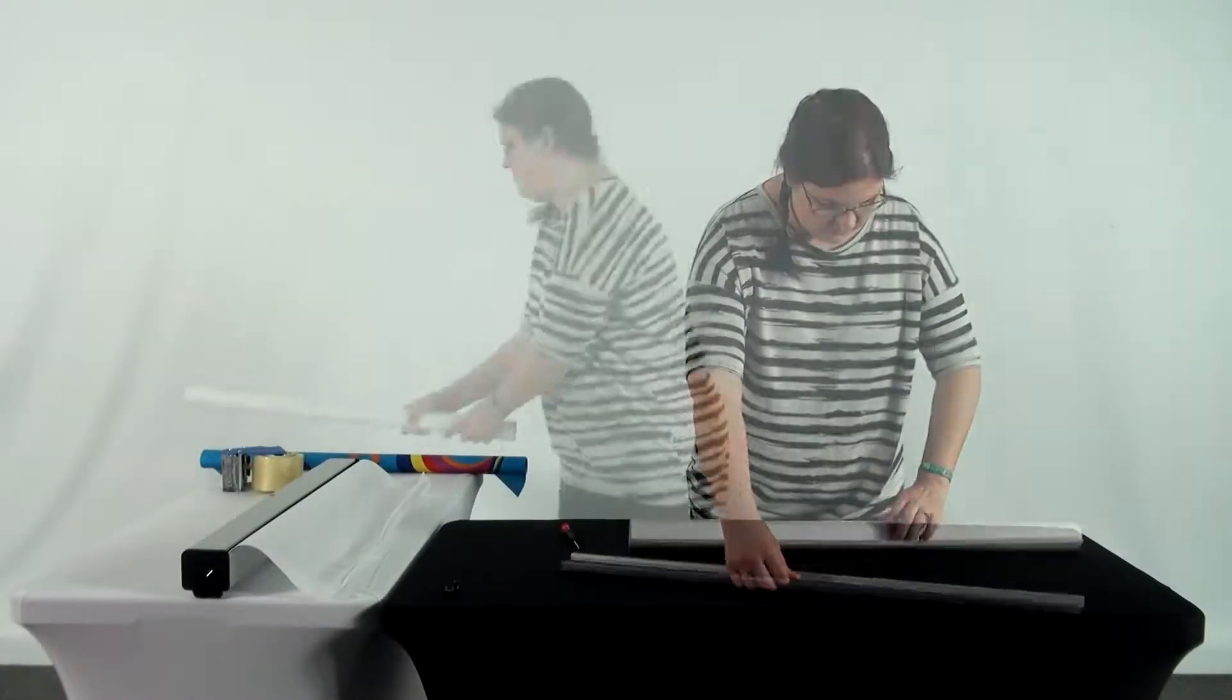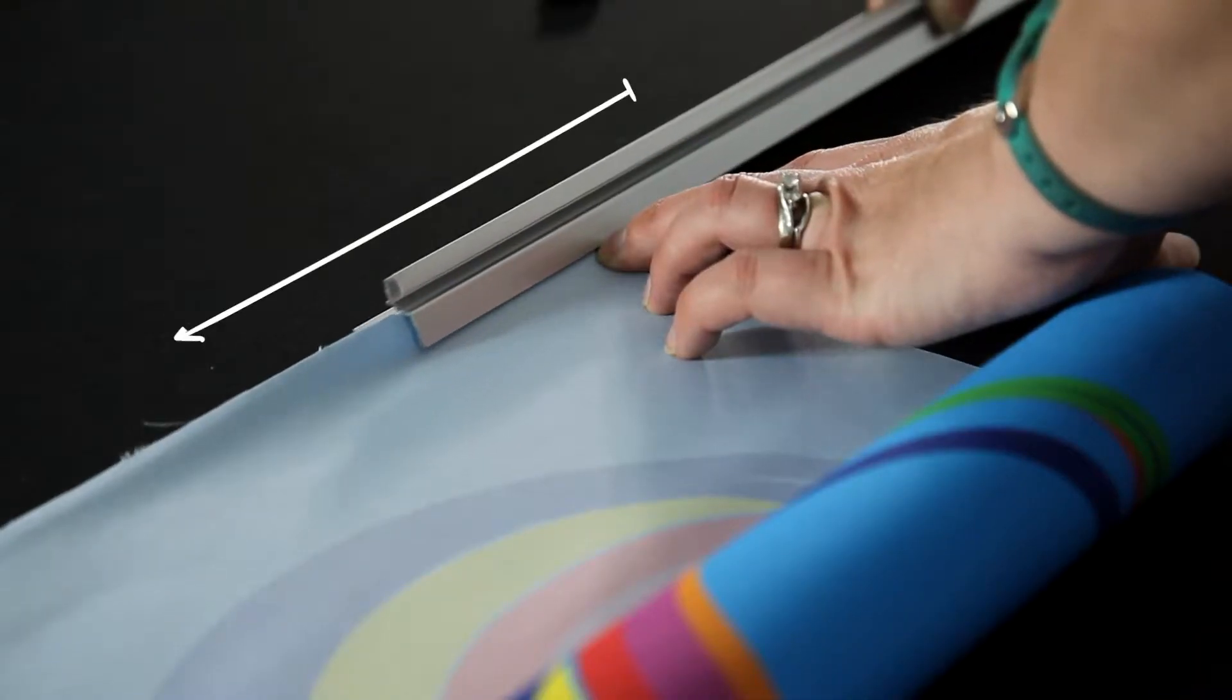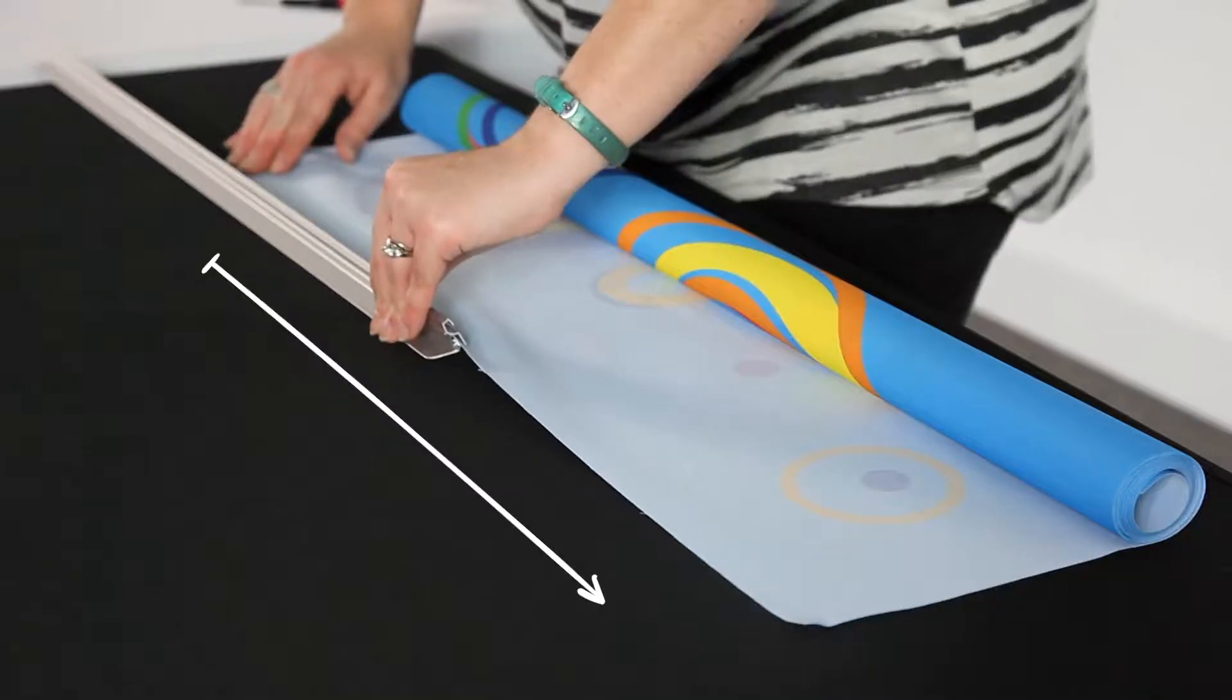You can now remove the clamping rail and grab your new print. Take the top of your new print and slowly slide it into the clamping rail.